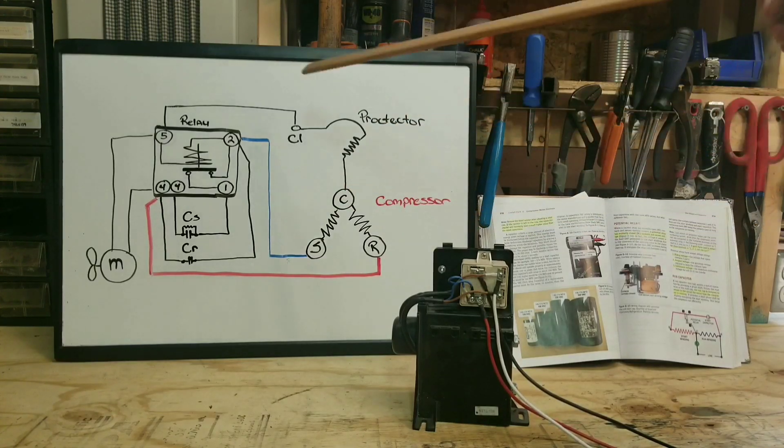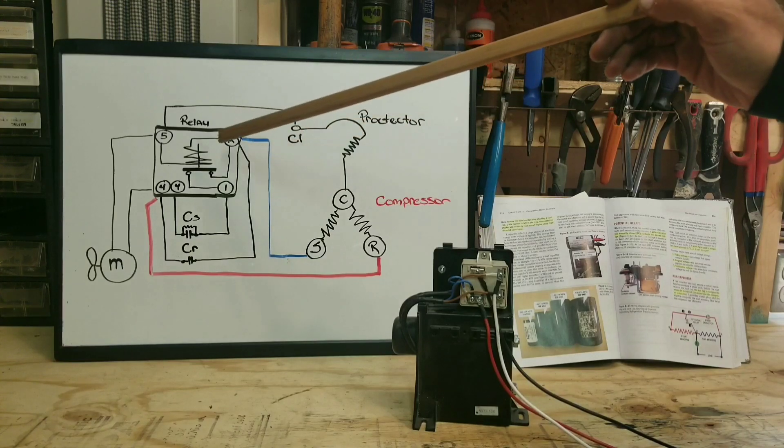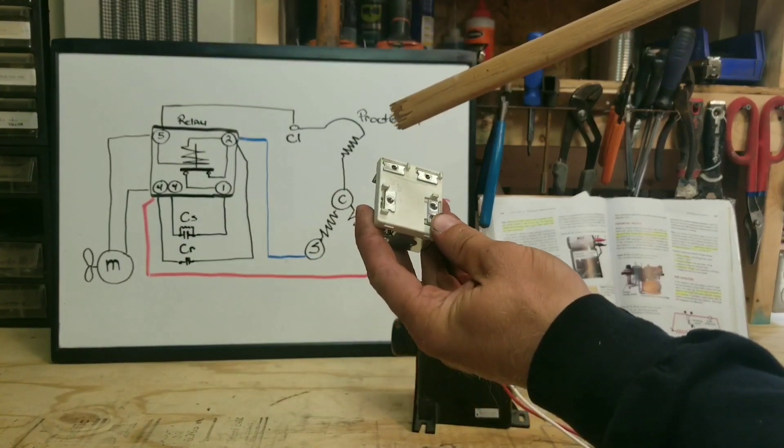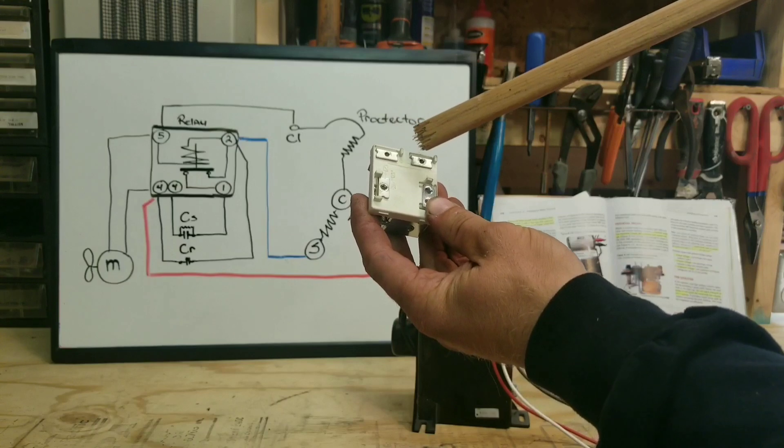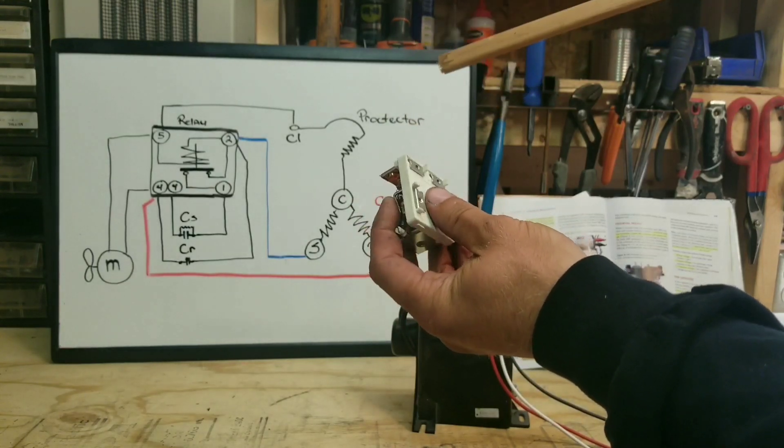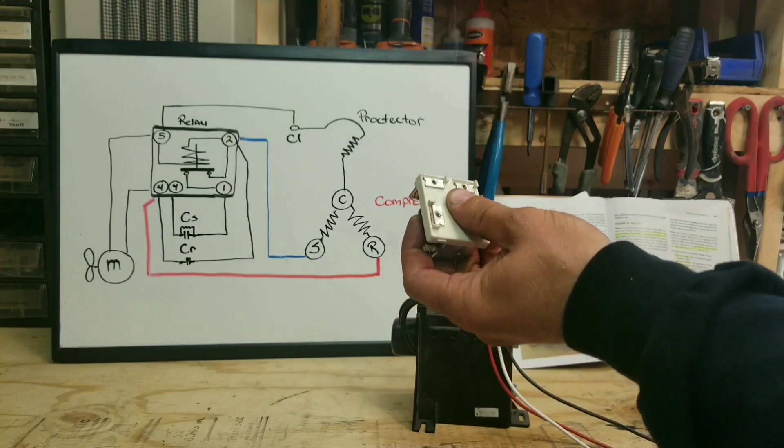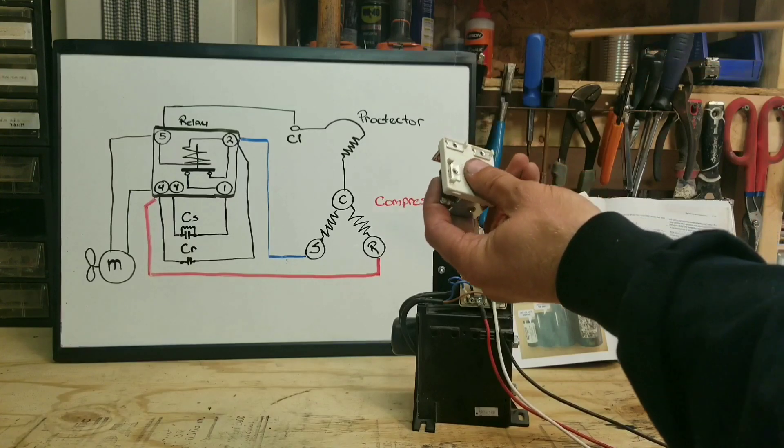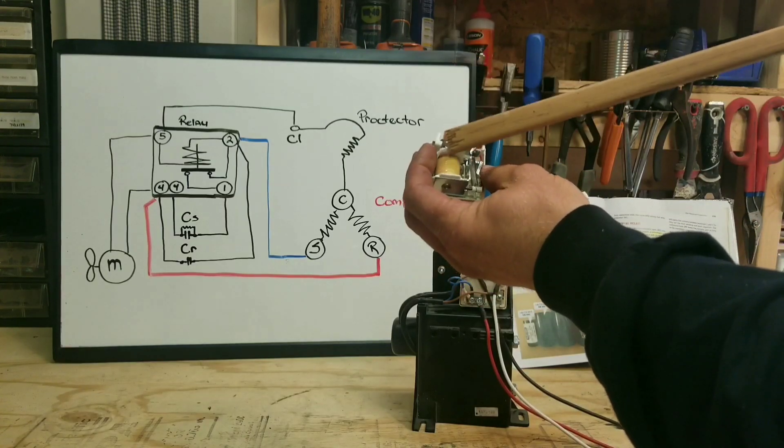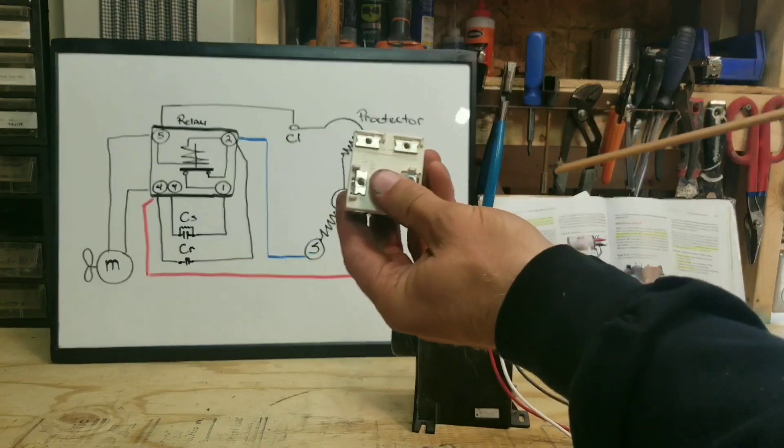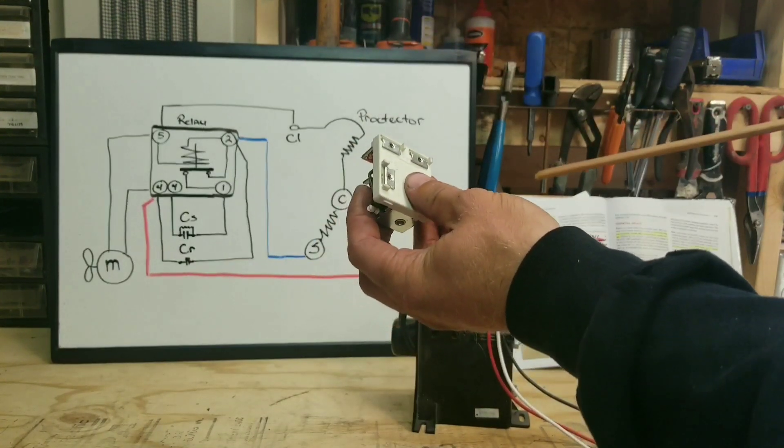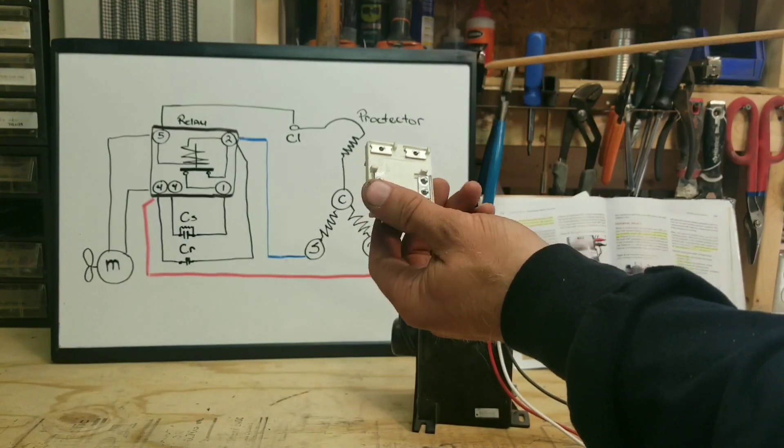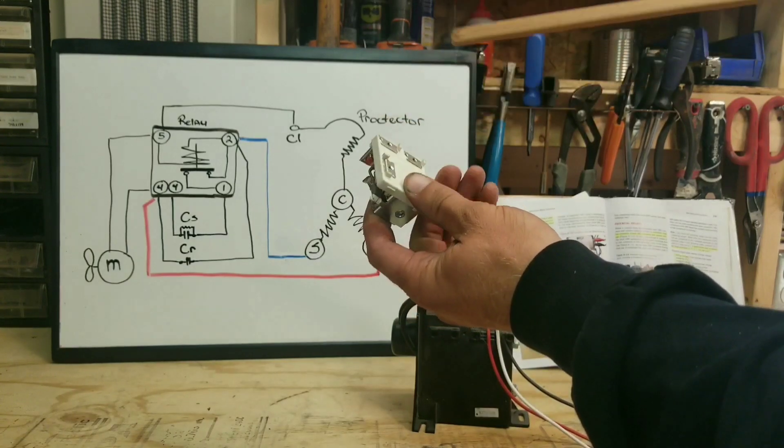And the best way to do that is, or the best way to test for that is, if you can take this relay off, unwire it, take it off, and then what you do is you just check between two and five, and you should have some sort of resistance. And that will vary depending on your actual potential relay, because they're manufactured by many different companies. But you should have some sort of resistance through this solenoid. So if you suspect that it's bad, you suspect that the start winding, or excuse me, that the start capacitor and the start winding are not getting taken out of the circuit, you can test across that and you can see if that solenoid is any good.